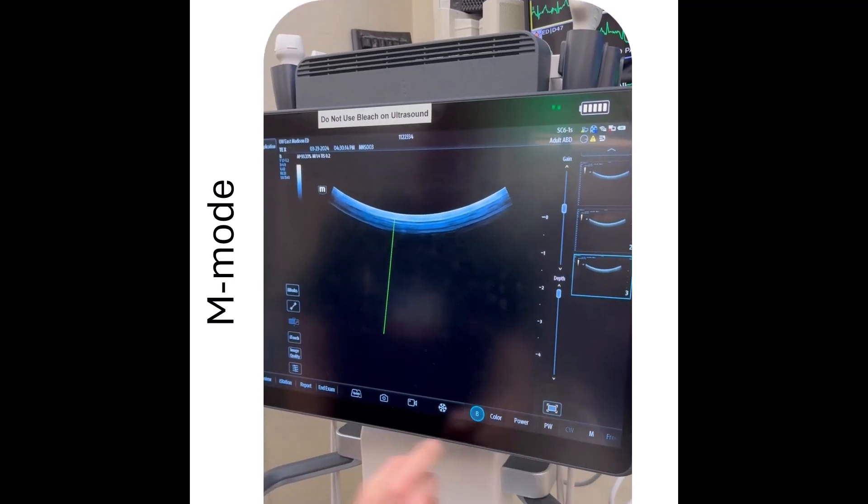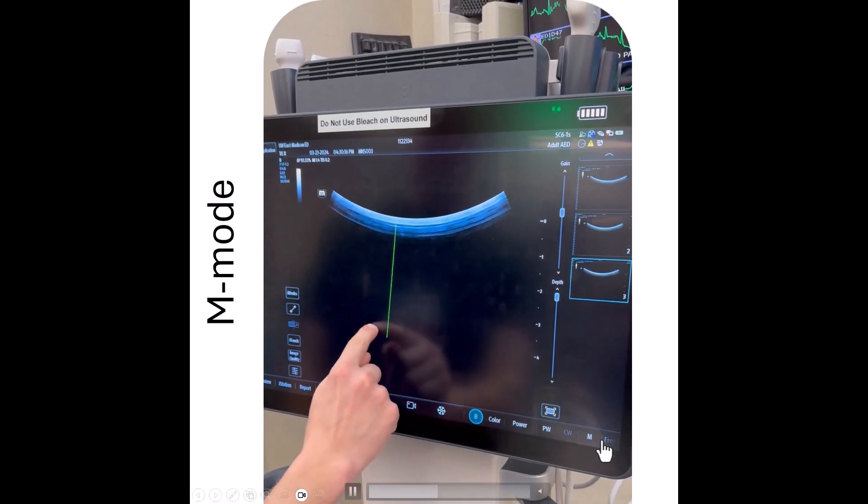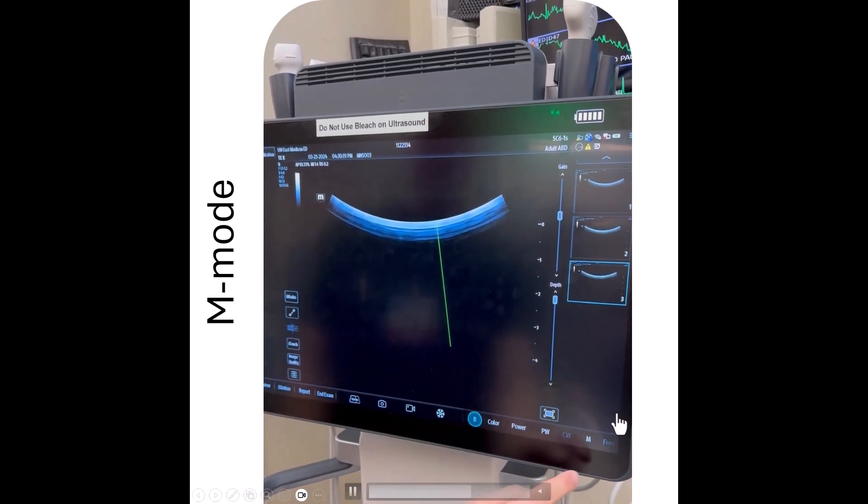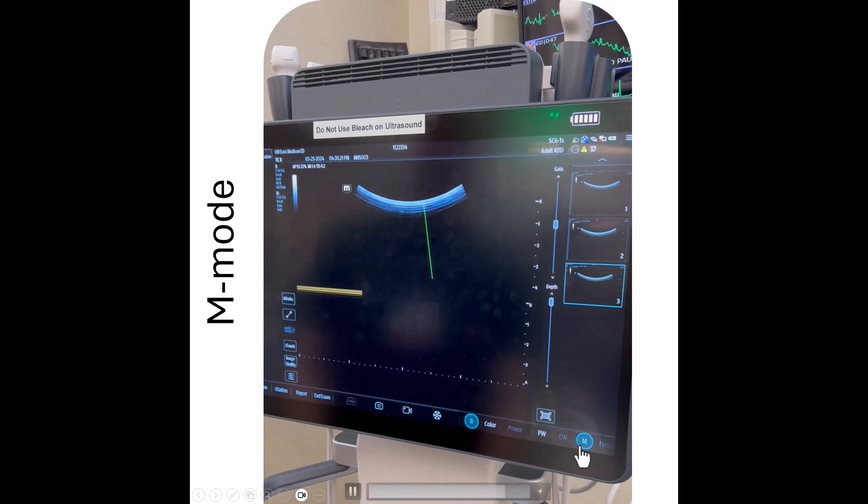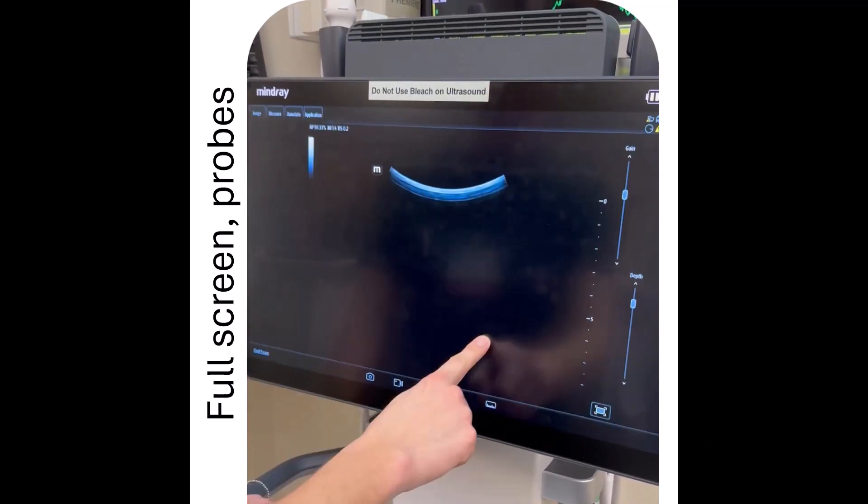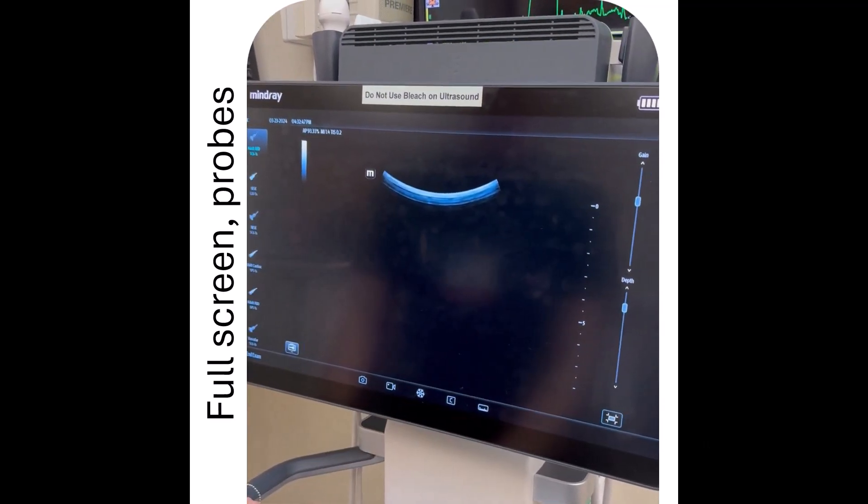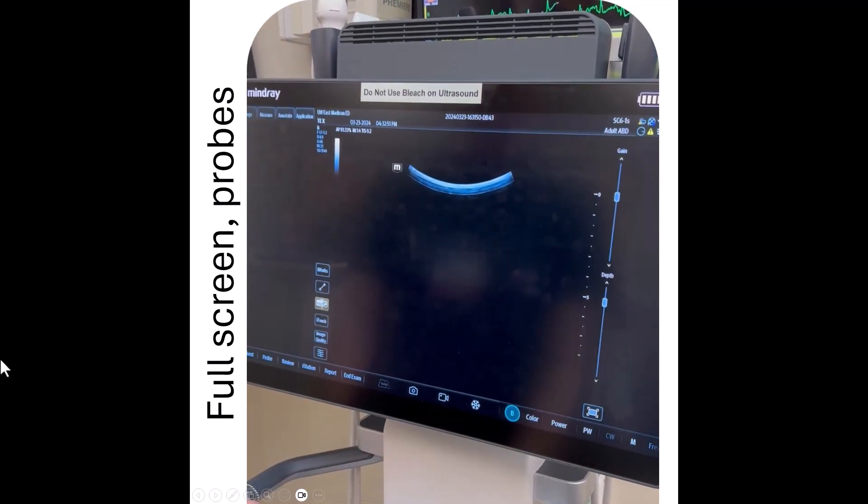We'll talk about M mode. M mode is this button on the far right corner here. Press it once. It gives you a line. Press the M again to activate the M mode. To enter full screen, simply swipe down. To exit out a full screen, you're going to click this icon here.